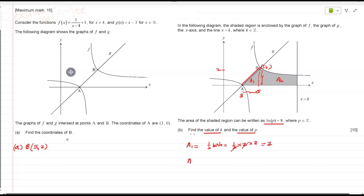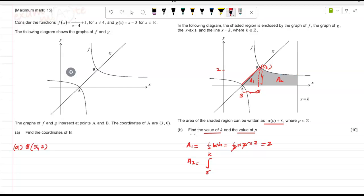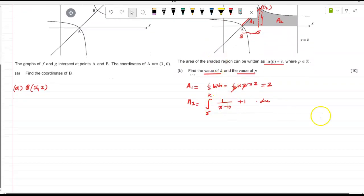So this is 2. Now if you're looking at a2, a2 you have to integrate it from 5 to k. You have to integrate it from 5 to k and this function, this function is what? 1 over x minus 4, that's your f. So 1 over x minus 4 plus 1, correct, dx. So what is that integral of that?